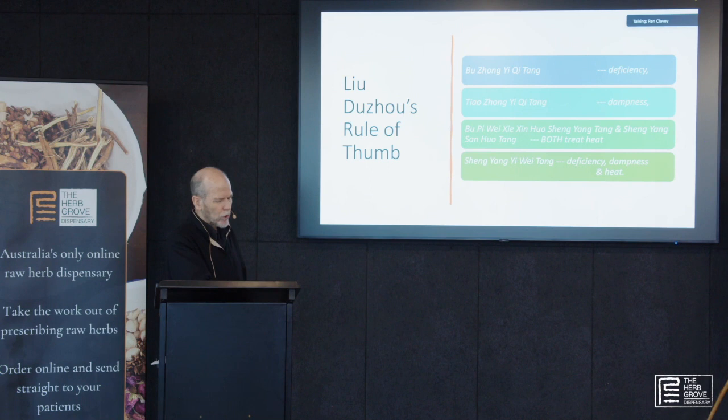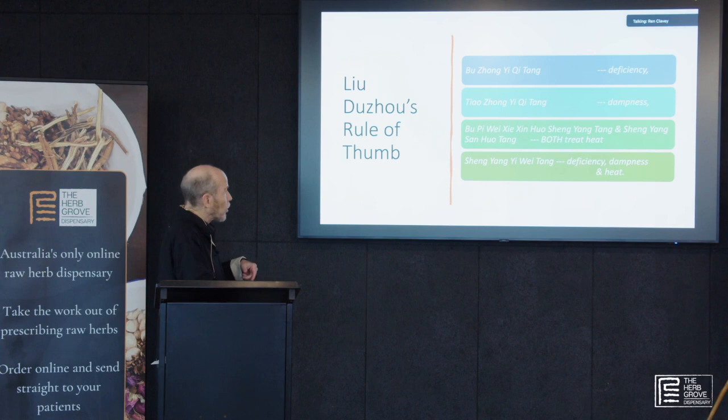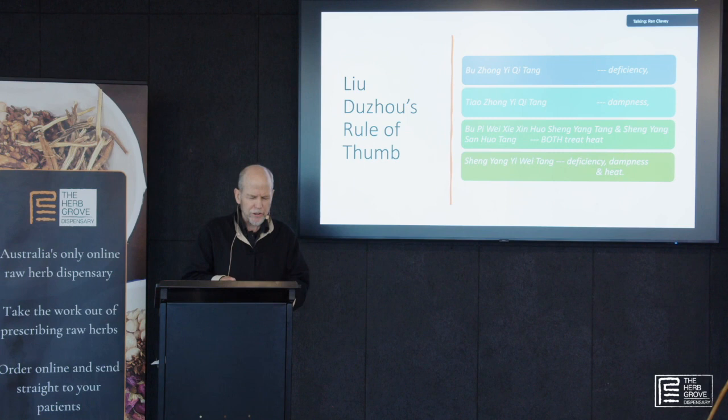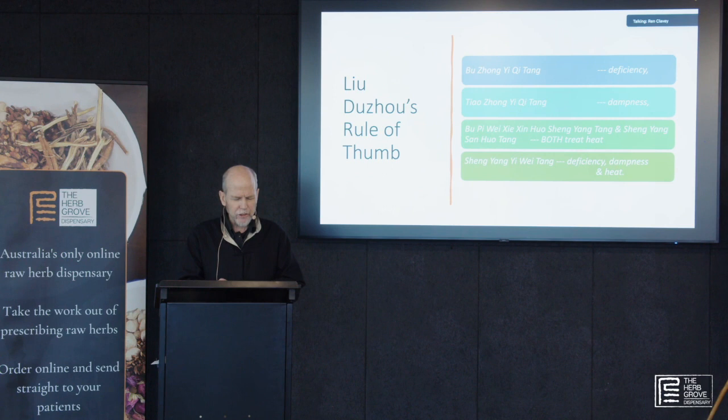He then gave a rule of thumb for choosing between these formulas — this is in your notes. If it's mainly deficiency, Bu Zhong Yi Qi Tang is a bit better for treating that. Tiao Zhong Yi Qi Tang, which is the 'regulate the middle to benefit the Qi' formula, is somewhat better for treating dampness.